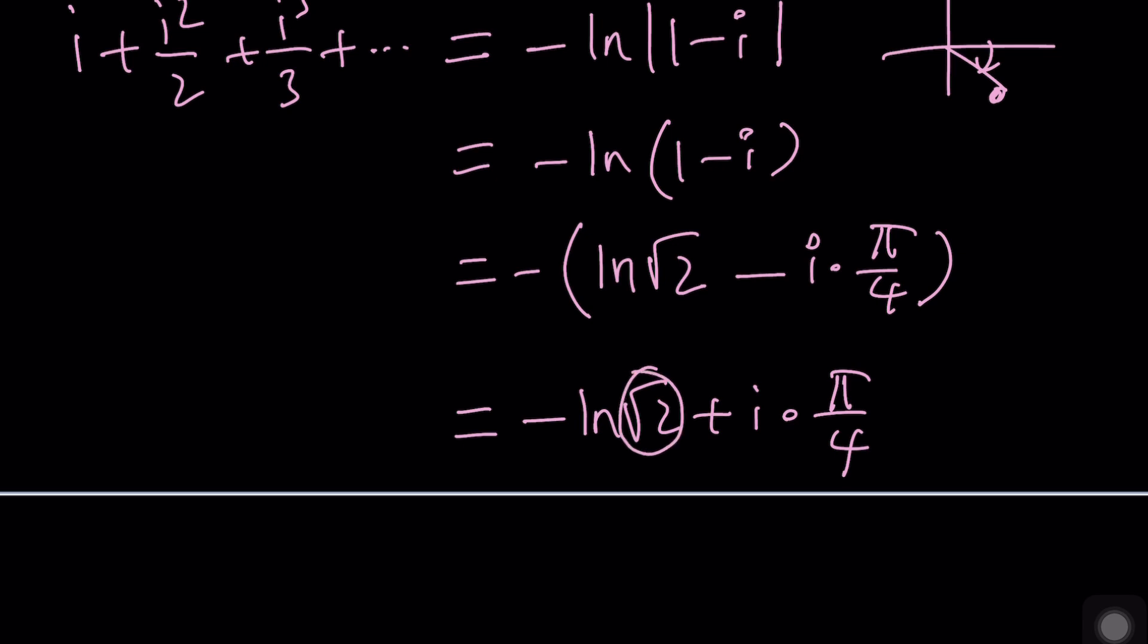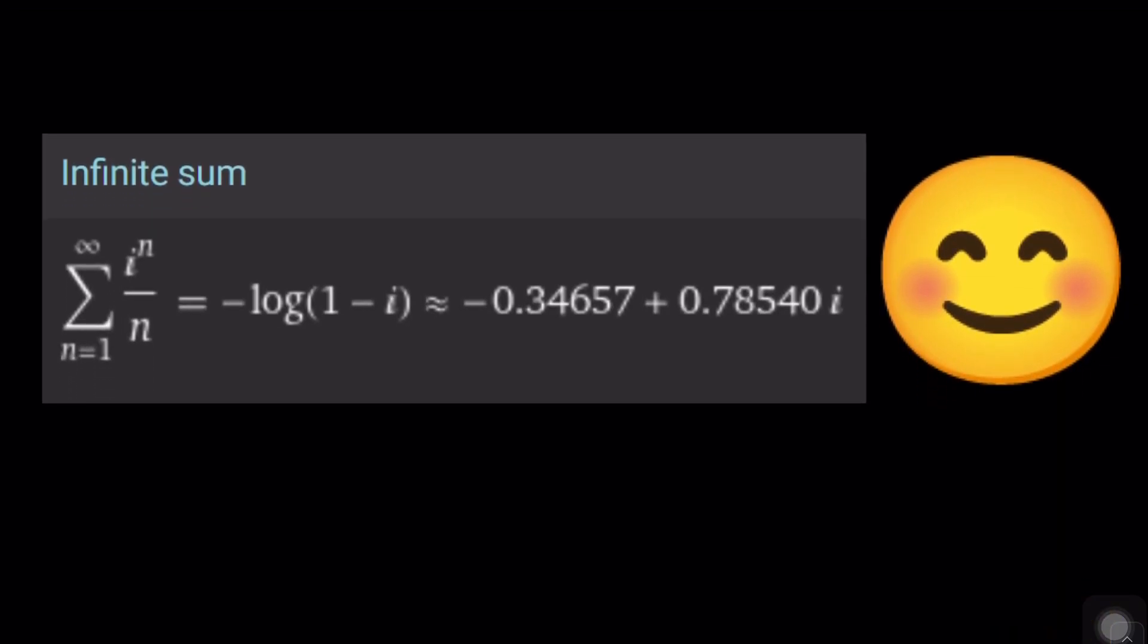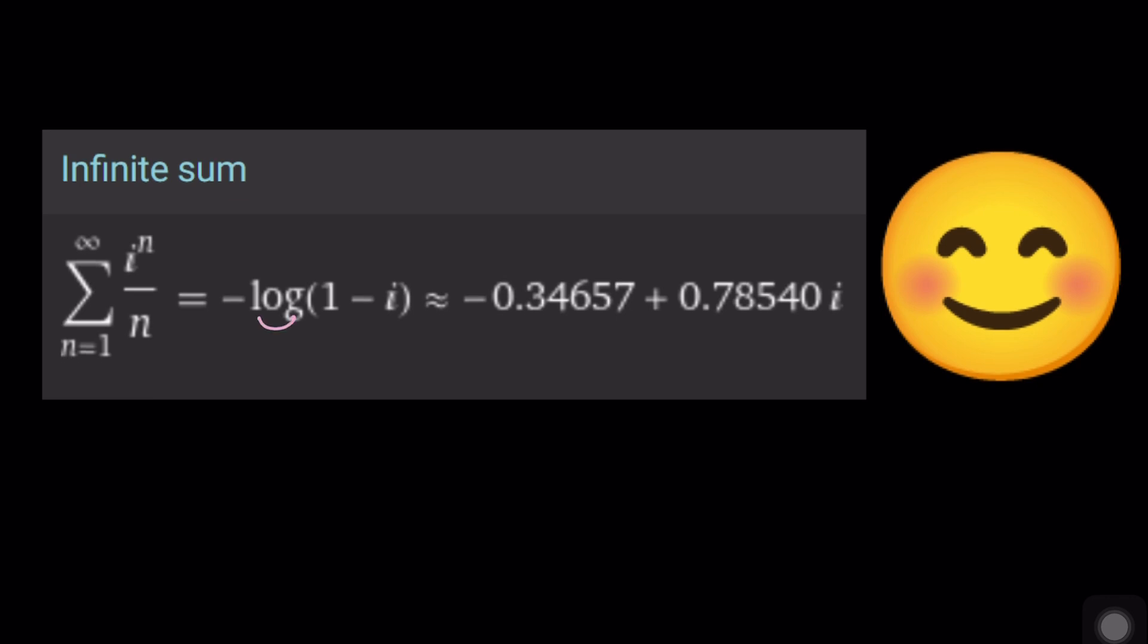Let's go ahead and take a look at Wolfram Alpha one more time. I wanted to give Wolfram Alpha a second chance, and this time it was able to find this infinite sum as negative ln—log means ln in the Wolfram Alpha world—negative ln 1 minus i, which is a complex number like this.